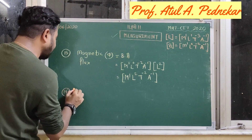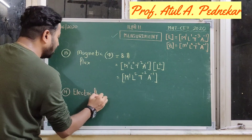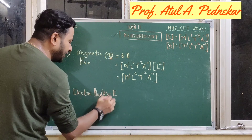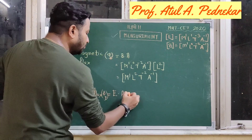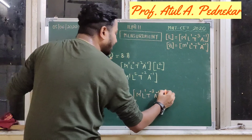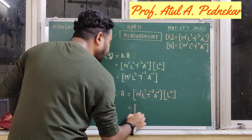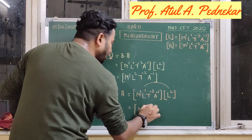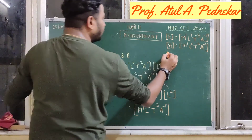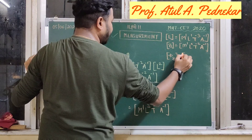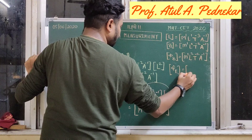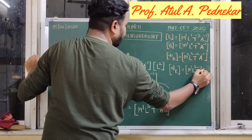Just as we operated for magnetic flux, we can operate for electric flux. Electric flux is calculated as E multiplied by area — replacing B with E. The dimensions of electric field intensity are M1, L1, T minus 3, A minus 1, multiplied by area dimensions L raised to 2. Simplifying: M1, L1 and L2 gives L to the power 3, T raised to minus 3, and A raised to minus 1. So magnetic flux dimensions are M1, L2, T minus 2, A minus 1; and electric flux dimensions are M1, L3, T raised to minus 3, A raised to minus 1.